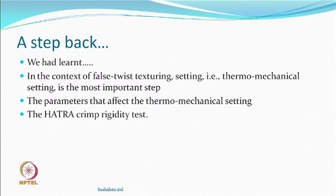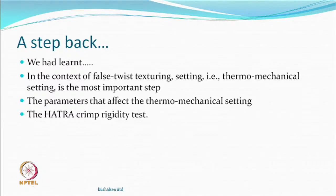We had learnt that in the context of false twist texturing, thermo-mechanical setting is one of the most important steps. There are some things which we must control, as they would help to achieve better setting. In thermo-mechanical setting, we are looking at release of energy. We also looked at which parameters matter, and we did talk about a crimp rigidity test method. When you talk about optimization, you should know how to evaluate first - only then will you say this is better or not so good.